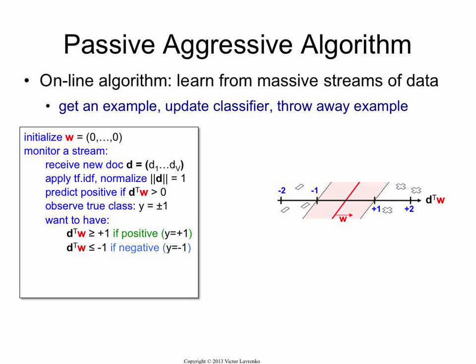Now, so this is what we would like to enforce. But what happens if that doesn't happen? So suppose our document is positive, so y is plus 1. If our document scores on the left side of the decision boundary, then the prediction is obviously wrong, right? So we want to penalize that decision and we want to change the weight vector.